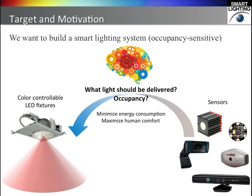Our target is to build a smart lighting system. We have controllable LEDs and some sensors. We want to deliver the correct light in the space — by correct, we mean we want to minimize energy consumption and maximize human comfort. For example, if the room is empty, the light should automatically turn off. If there are many people in the room, the intensity of the light should be strong enough. We call this occupancy sensitive lighting, and the sensor is the key to capture the occupancy information.